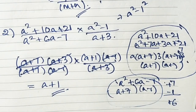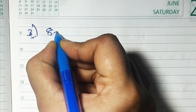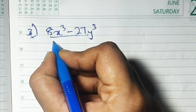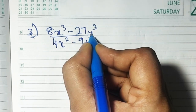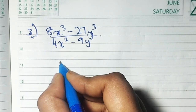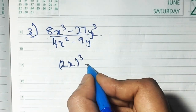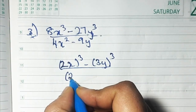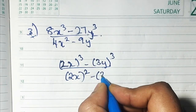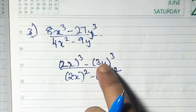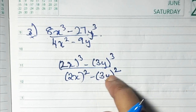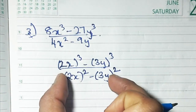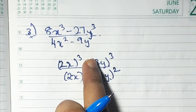Sum number 3: (8x³ - 27y³)/(4x² - 9y²). For 8 we write (2x)³ and for 27 we write (3y)³. For 4 we write (2x)² and for 9 we write (3y)². The cube of 2 is 8, the square of 2 is 4, the cube of 3 is 27, the square of 3 is 9.